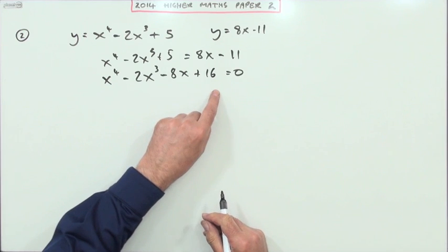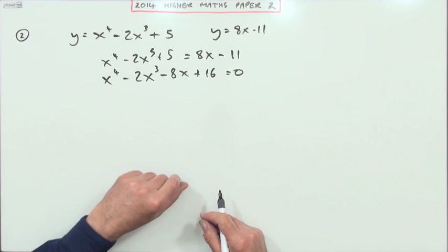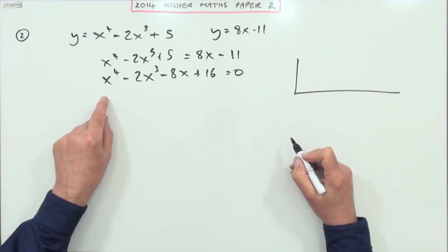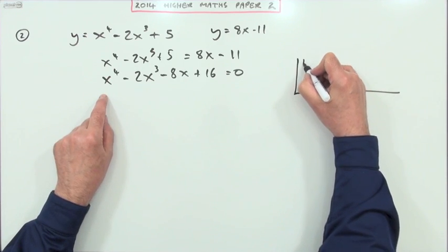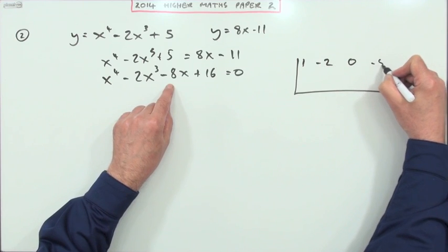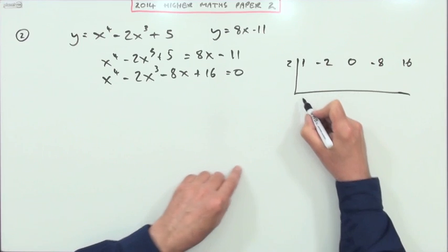That means I'll have to factorise this, and hopefully in the factorisation I'll find a pair of equal factors. Equal roots will mean it's a tangent. Well, I could use synthetic division here because I do know one root of this equation. I've got 1, negative 2, 0, negative 8, and 16. I know that it was at x equals 2, so 2 should work.